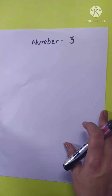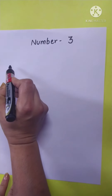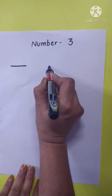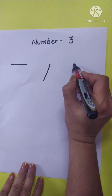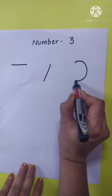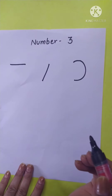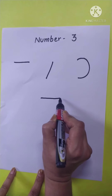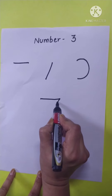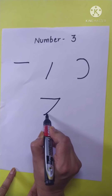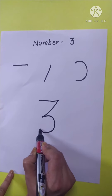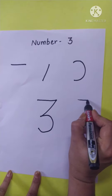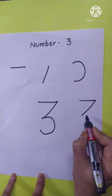Now let us see which pattern we have to use for number three. One is a sleeping line, then a slant line, and a clockwise curve. In the pattern, to make number three, first we will make a sleeping line, then a slant line, then a curve.